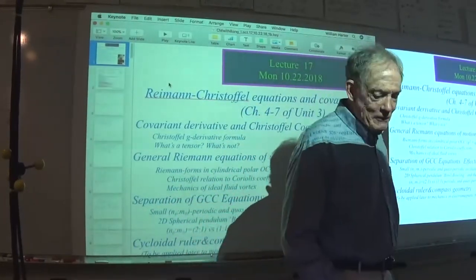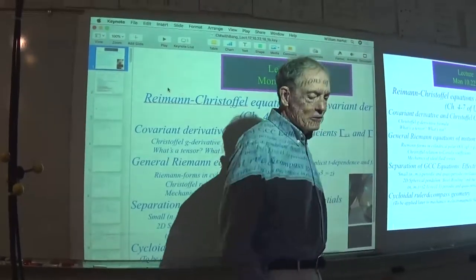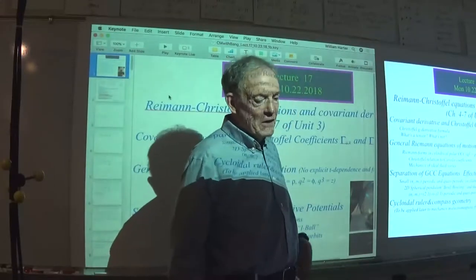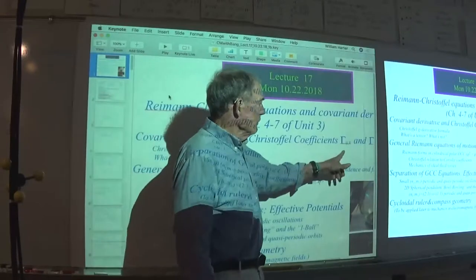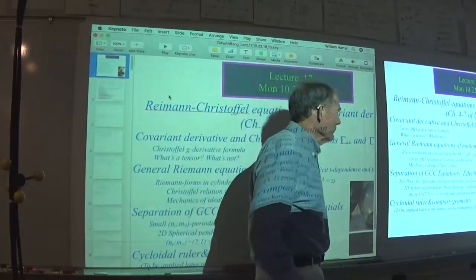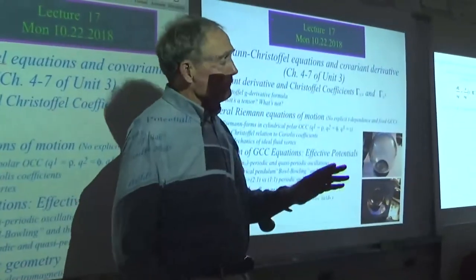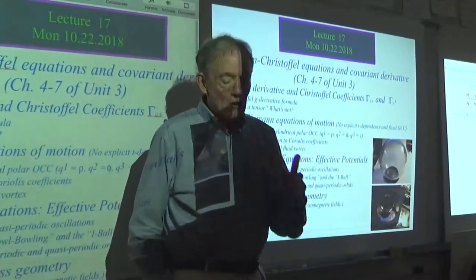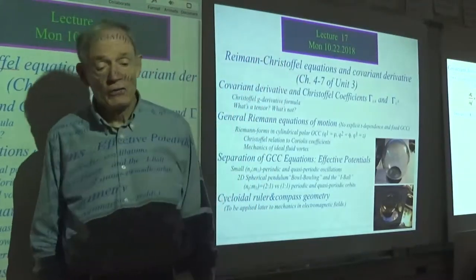One of the most difficult parts of mechanics is when it gets applied to relativity or hydrodynamics. We're talking about plasma physics, and that involves tensor analysis and the use of these funny little symbols — some people call them the Christoffel symbols. I'm trying to make them more friendly by showing that they're basically the Coriolis, centrifugal, whatever — involves curvilinear coordinate forces, fictitious forces.